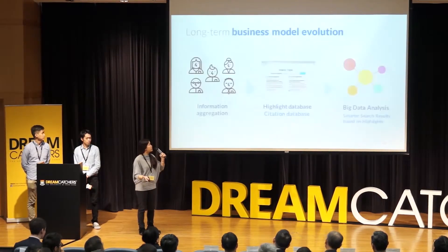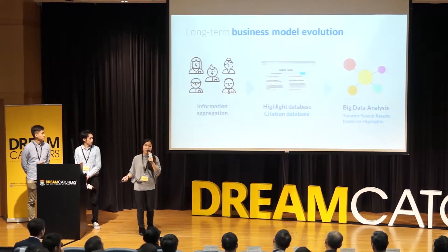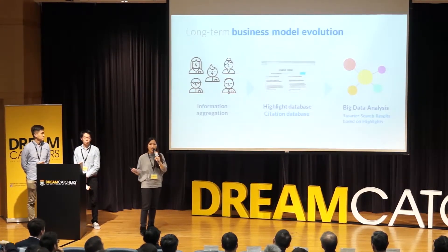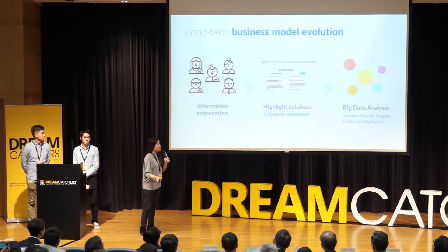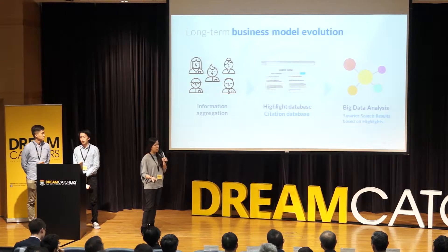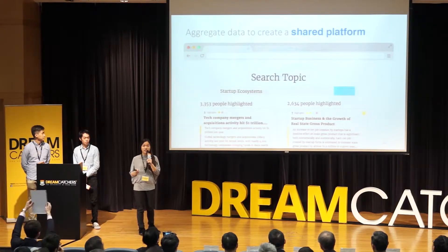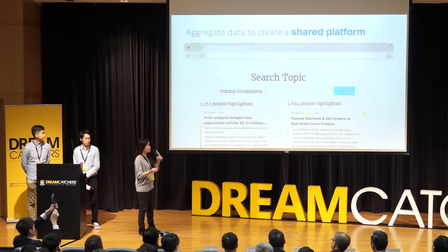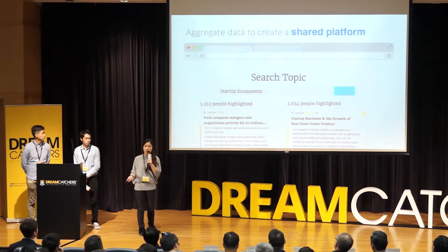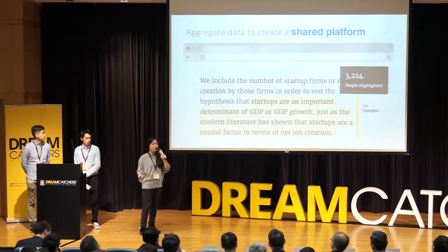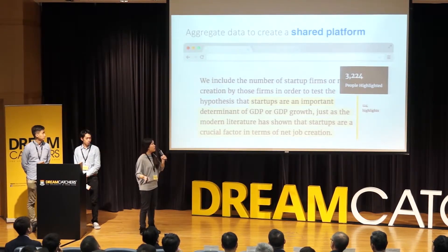Our long-term vision is to do more than just be an essay painkiller. Imagine we have all these highlights from students around the world — we can aggregate them into a highlight database or citation database and do big data analysis on it. We can build a Quora for essays where students can search on an essay topic and we'll provide not just a website link or URL, but the exact sentence they're looking for. Or when you're searching a website, we can show how many people highlighted the most important part of the article.